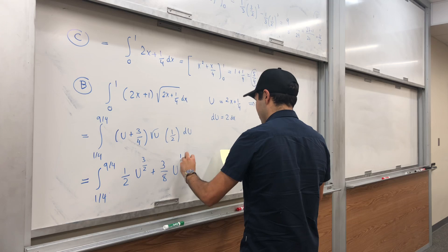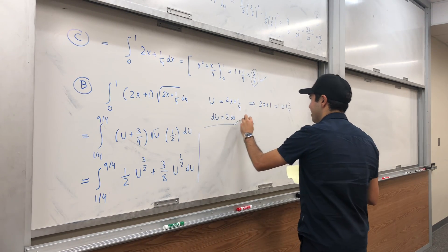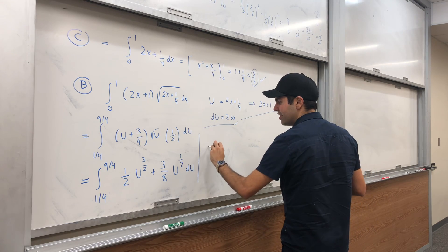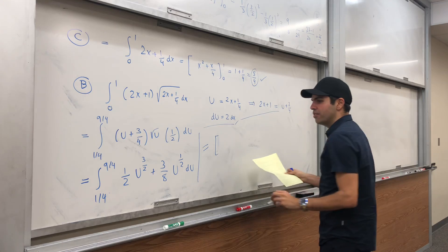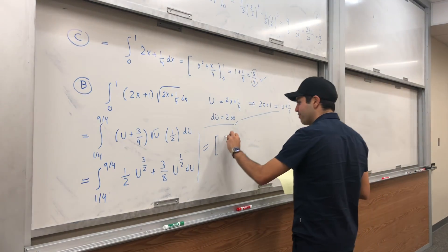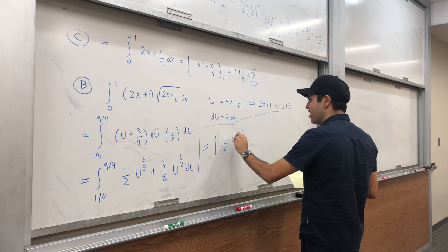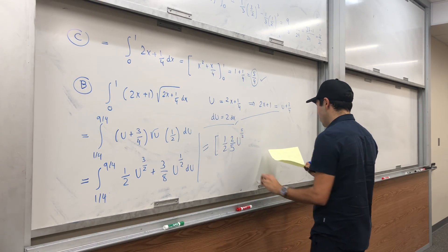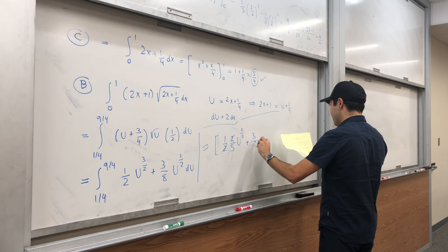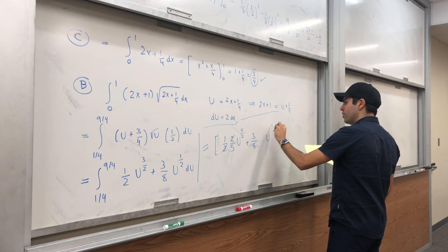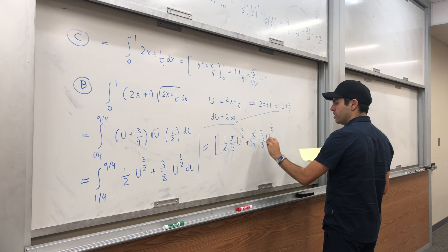And then let's evaluate that chunk. That equals the integral—sorry, antiderivative—so 1/2 and then u^(5/2), and to eliminate this 5/2 multiply by 2/5, so this already cancels out. And then 3/8, so u^(1/2) becomes u^(3/2), and you do 2/3, so the 3 cancels out and the 8 becomes a 4. And that's from 1/4 to 9/4.